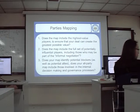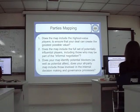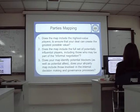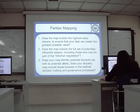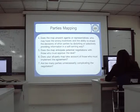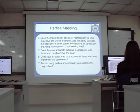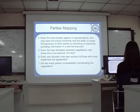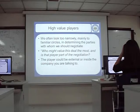The seven steps are: one, does the map include the highest value players to ensure the deal can create the greatest possible value? Two, does the map include the full set of influential players? Three, does your map identify the blockers? Four, does it pinpoint agents who have the wrong incentives? Five, does it anticipate negotiations with those who must approve the deal? Six, does it take account of those who must implement the agreement? Seven, are too many parties unnecessarily complicating the agreement?